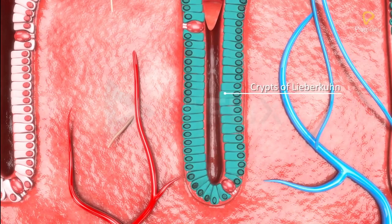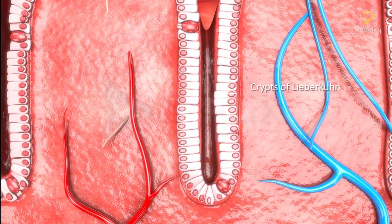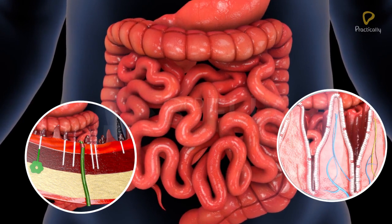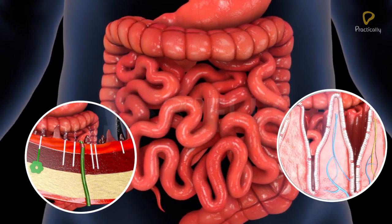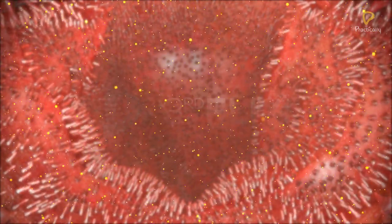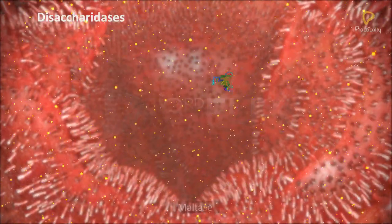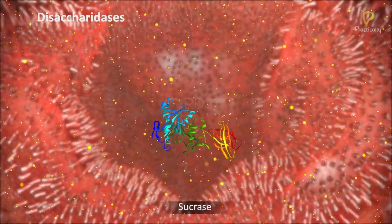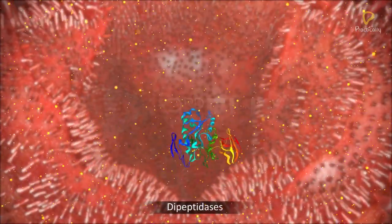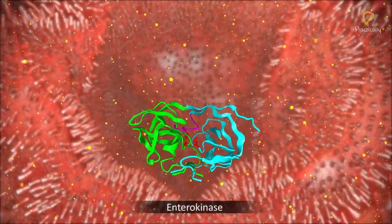The mucosa of the small intestine forms crypts between the bases of the villi, called crypts of Lieberkühn. The secretions of the brush border cells along with the intestinal glands constitute the intestinal juice, or succus entericus, with a pH of 7.8. Succus entericus contains a variety of enzymes including disaccharidases, maltase, sucrase, lactase, aminopeptidases, dipeptidases, lipases, nucleotidases, nucleosidases, enterokinase, and mucus.